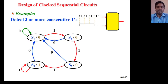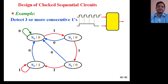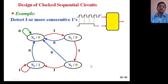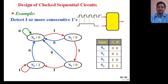Now you have to design the clocked sequential circuit. In the previous two video lectures I explained how to draw the state diagram. For practice you have four state diagrams — two using D flip-flops and two using JK and T flip-flops. There are four states: S0 is 00, S1 is 01, S2 is 10, and S3 is 11.